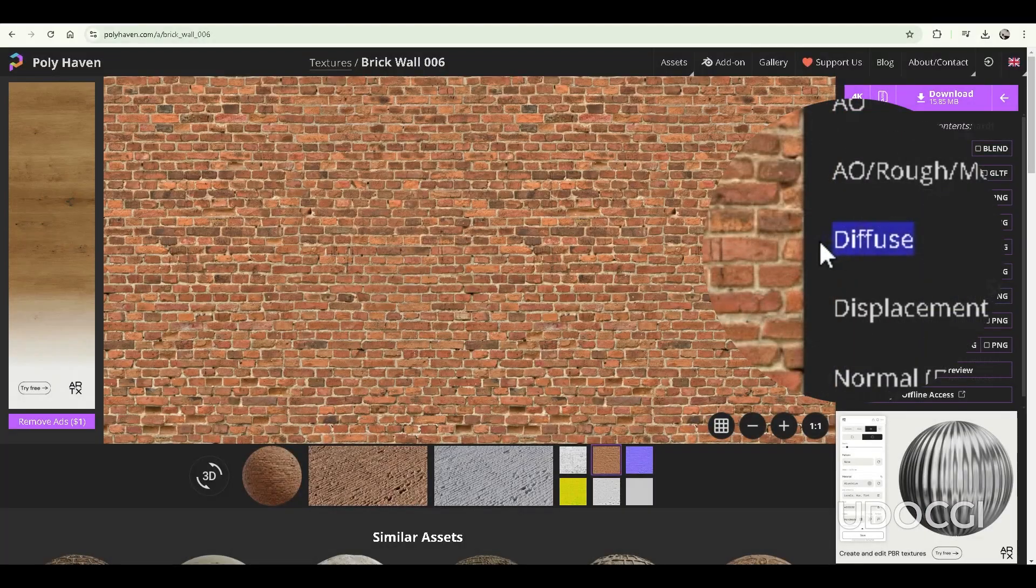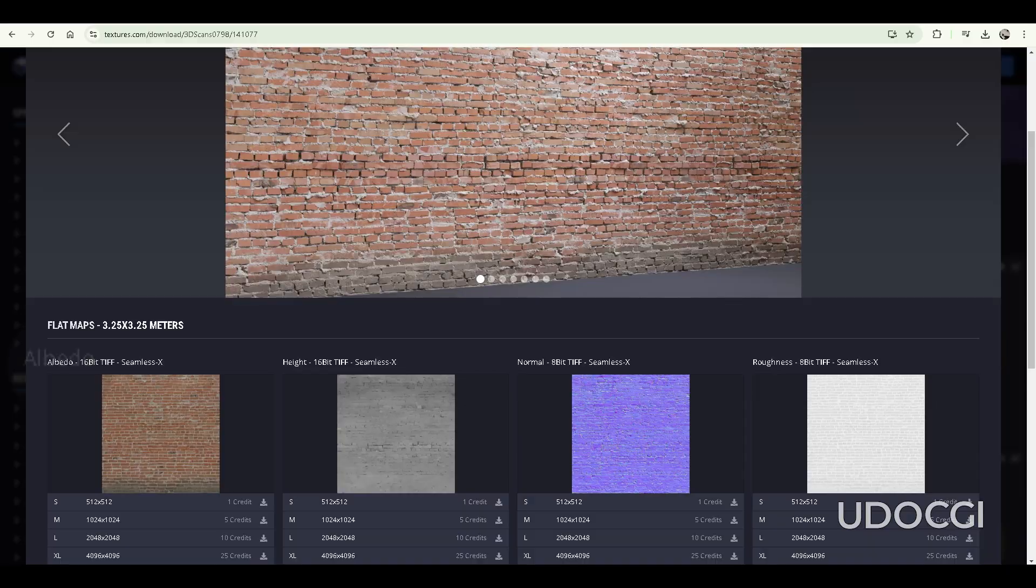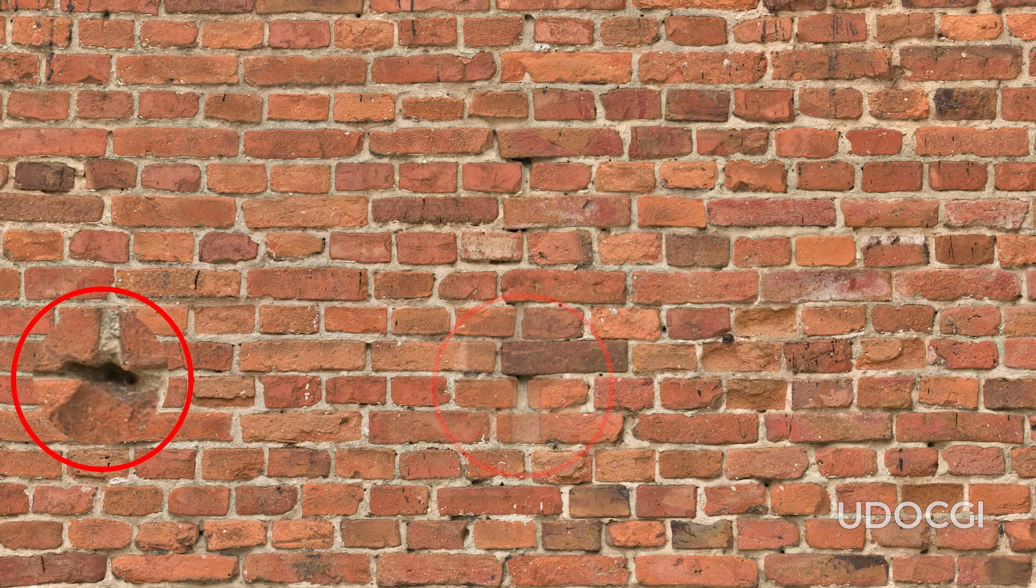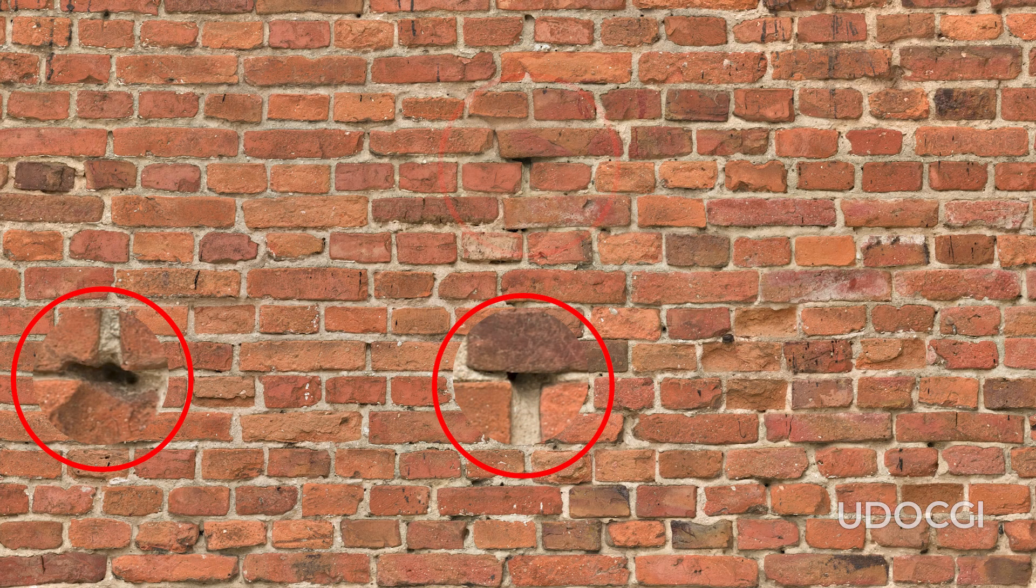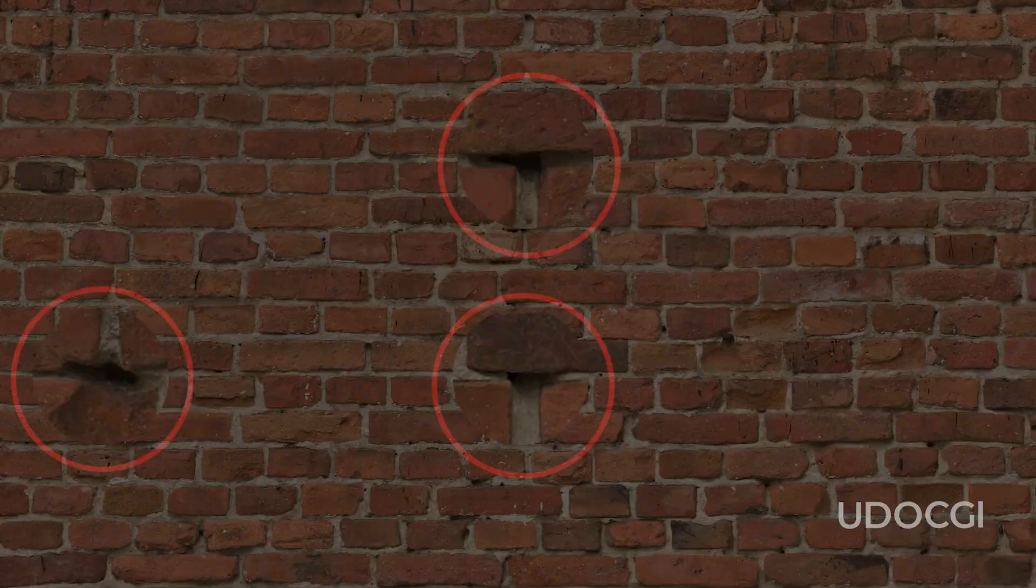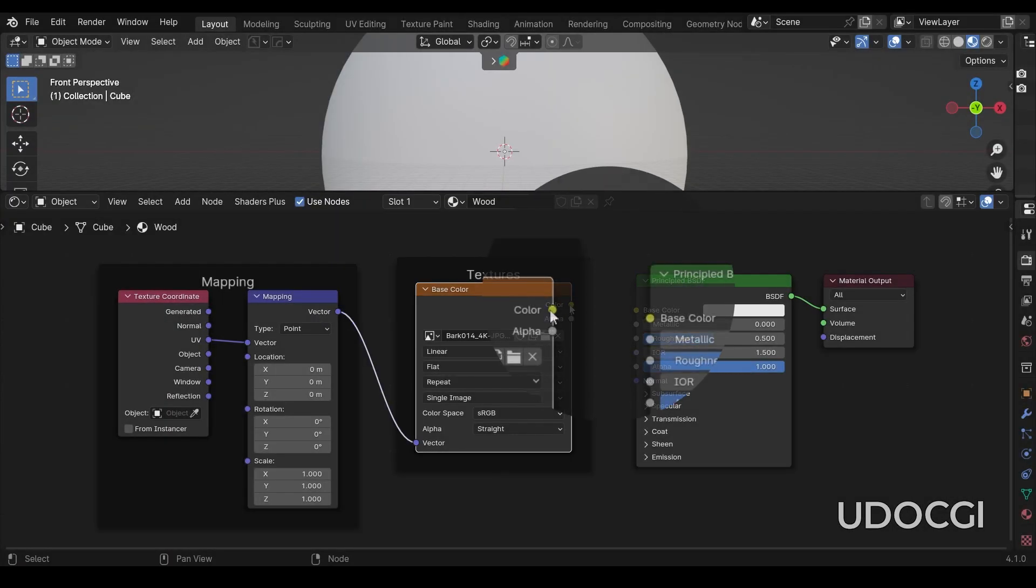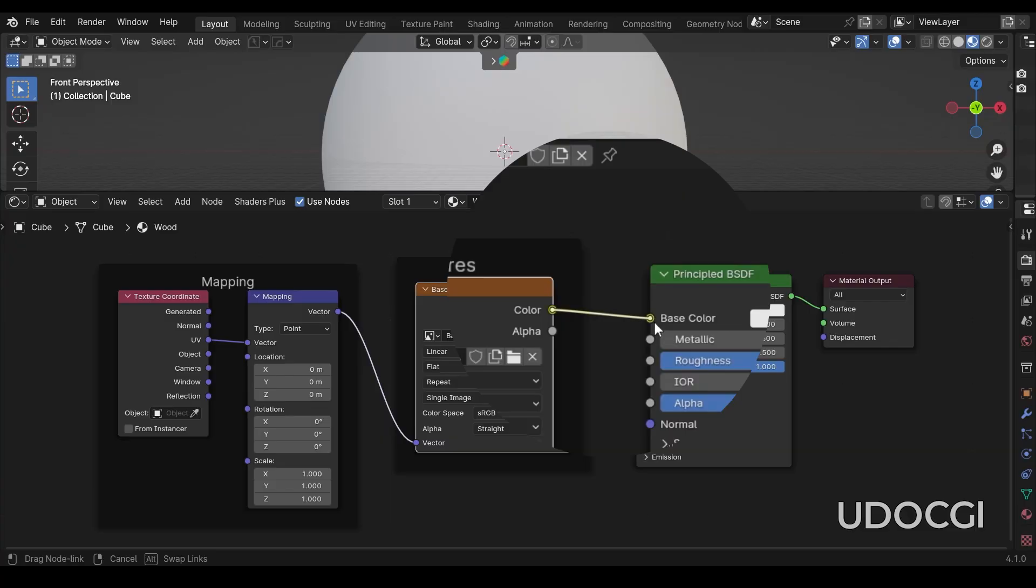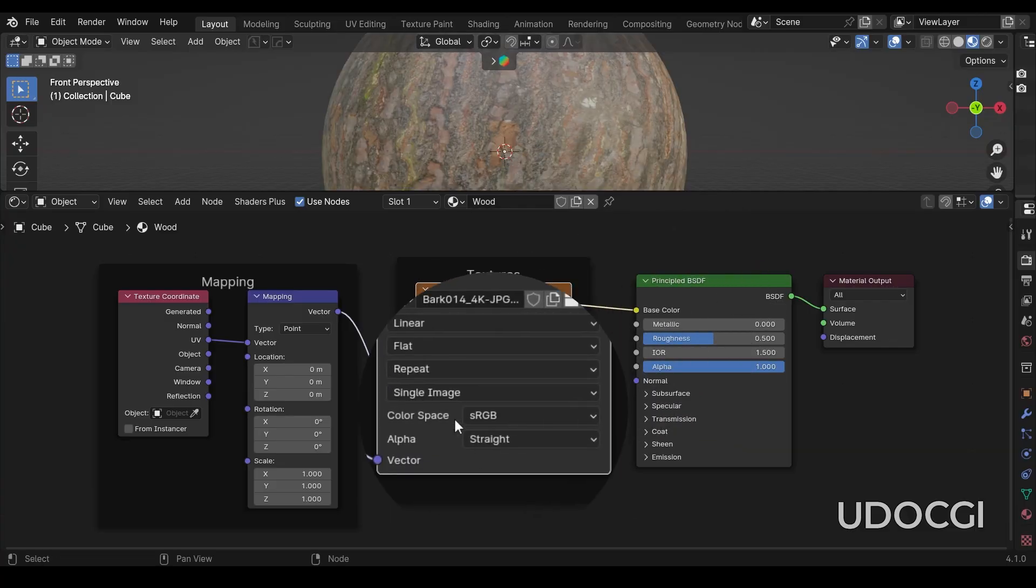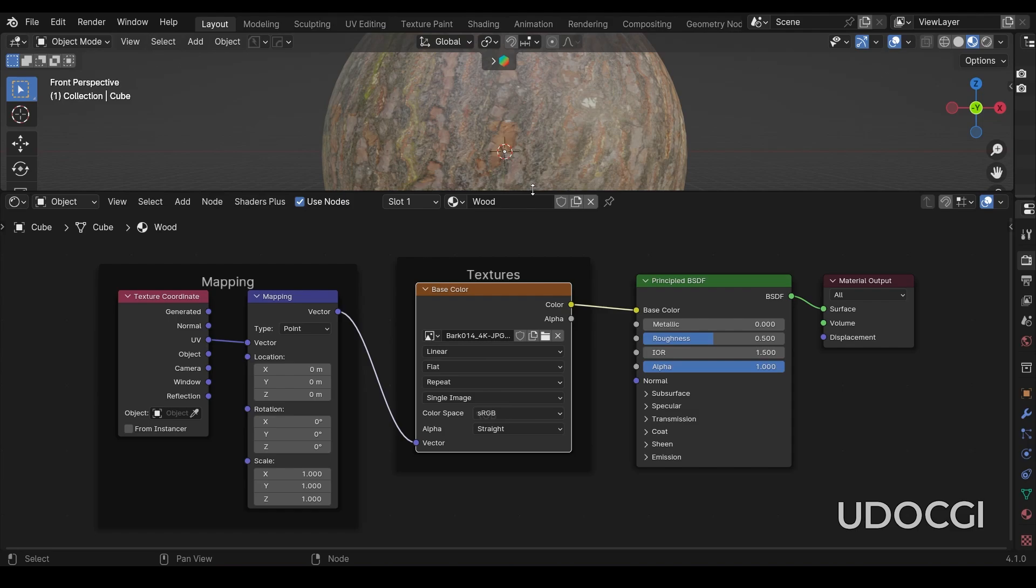When downloading textures online, you might find both diffuse and albedo maps. Both can be used depending on your needs, but note that diffuse maps may contain baked lighting, which can limit the realism of your renders by restricting your ability to adjust shadows and highlights. In Blender, the color map is connected to the base color socket of the principal shader and uses sRGB color space to show the material's color properties.